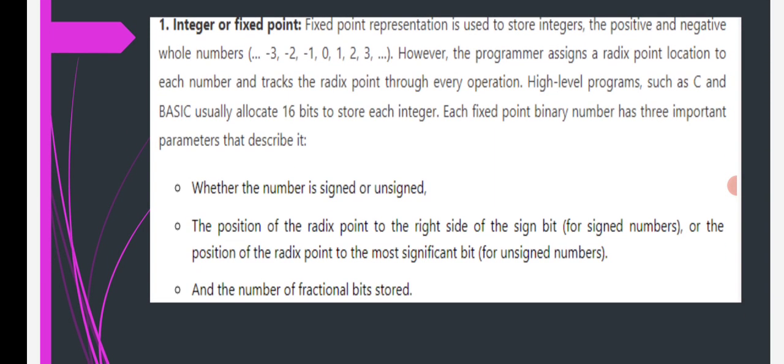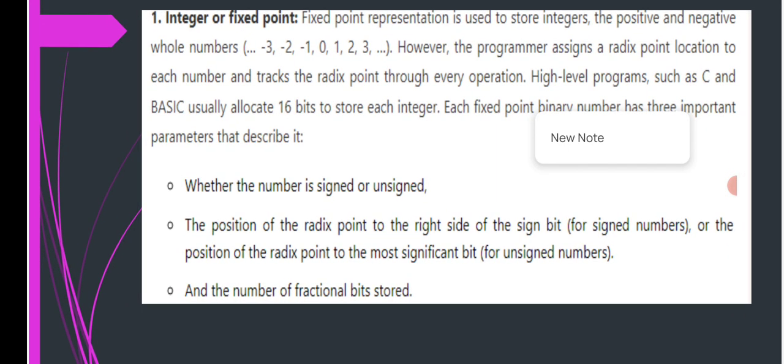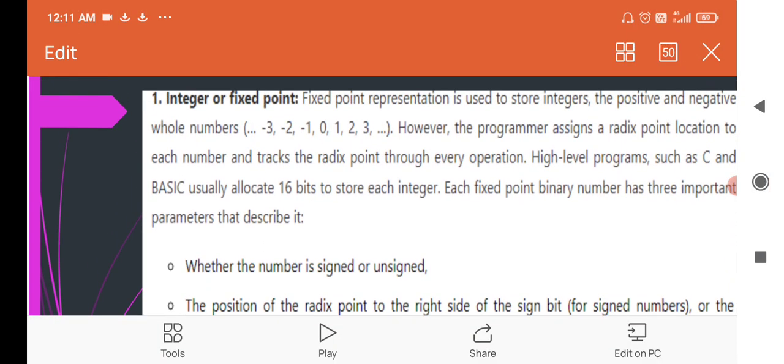The integer or fixed-point representation is used to store integers. The positive or negative whole numbers are -3, -2, -1, 0, 1, 2, 3, and so on. However, the programmer assigns a radix point location to each number and tracks the radix point through every operation. High-level programs such as C and BASIC usually allocate 16 bits to store each integer.